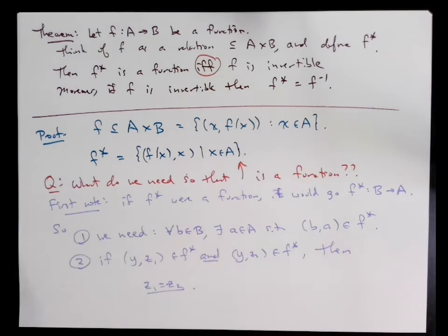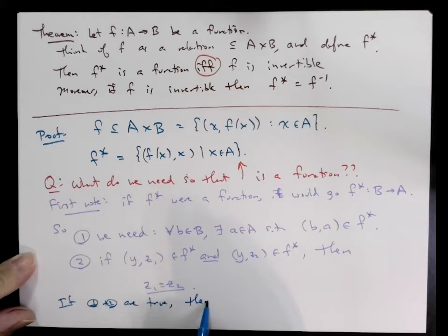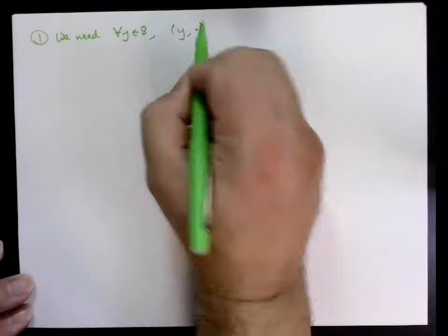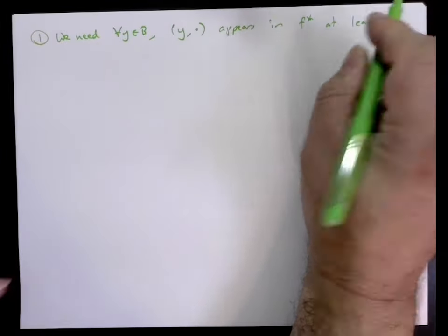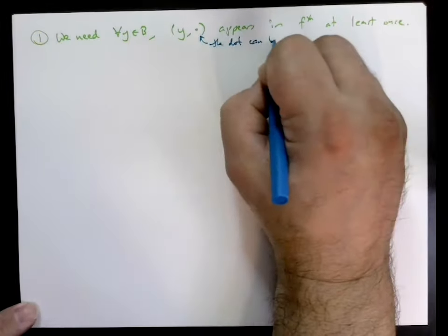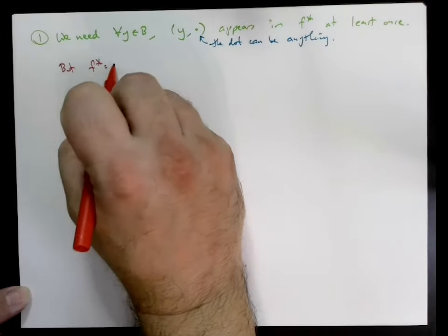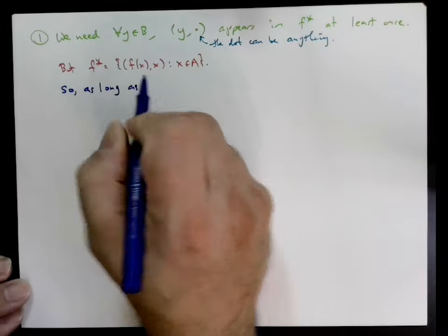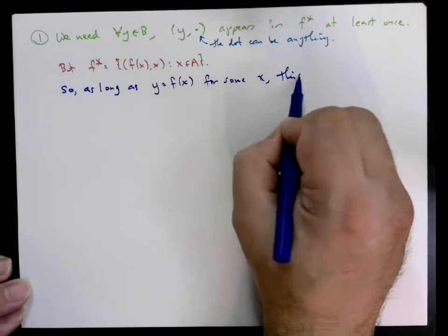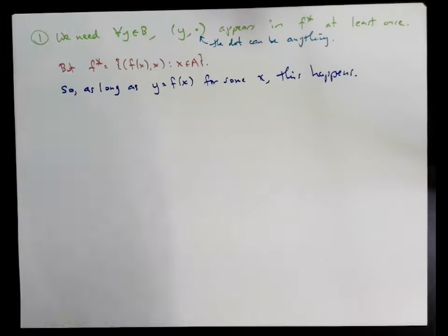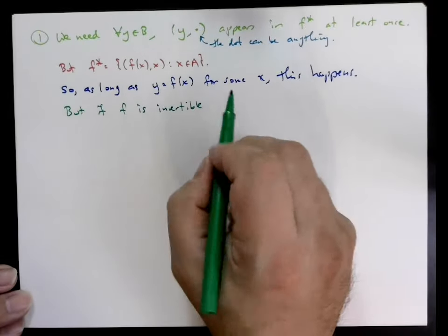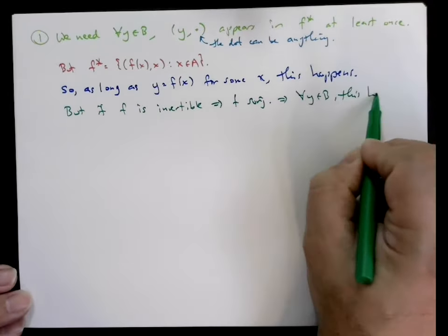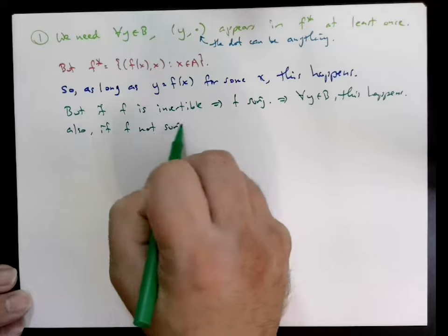So we first need that for any y in B, (y, something) is a subset of F*. In other words, we need at least one pair in there where y is the first term. But notice this is true if and only if y equals f(x) for some x in A, or that y is in the range of f. And of course, f being surjective is true if and only if for all y in B, (y, something) is in F*. So surjectivity is required.